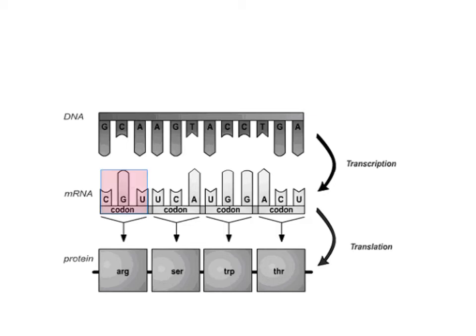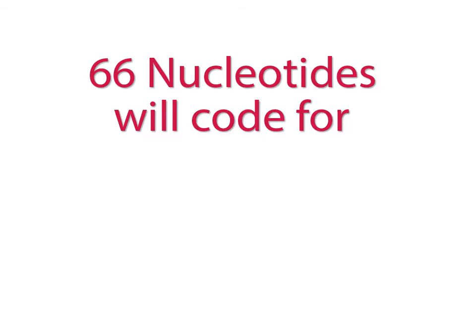For example, the first codon shown in the diagram, CGU, instructs the ribosome to put the amino acid arginine as the first amino acid in this protein. Note that 12 nucleotides in the diagram code for four amino acids. How many amino acids will 66 nucleotides code for?